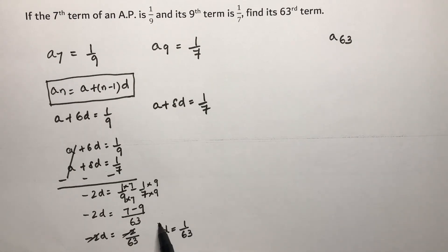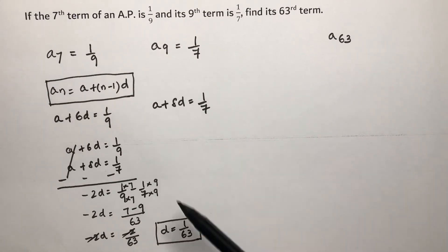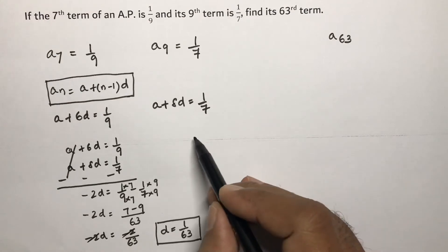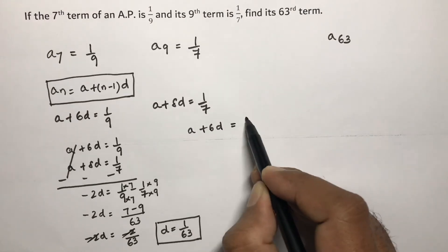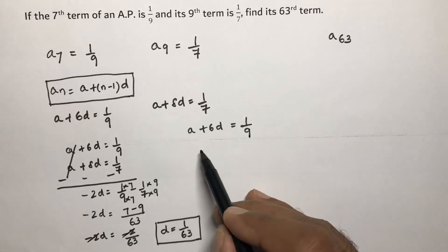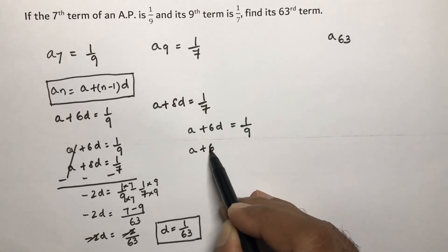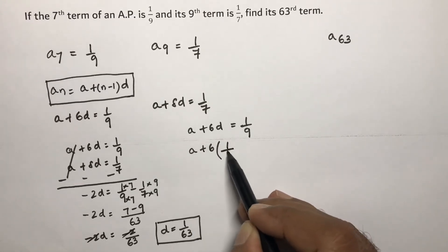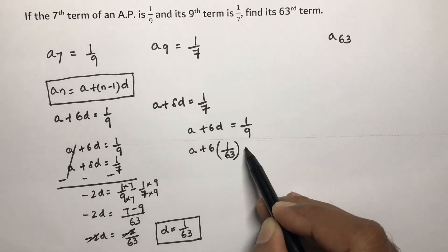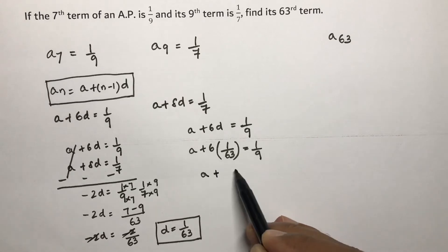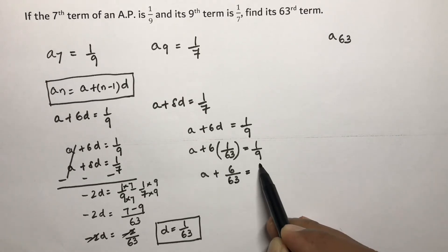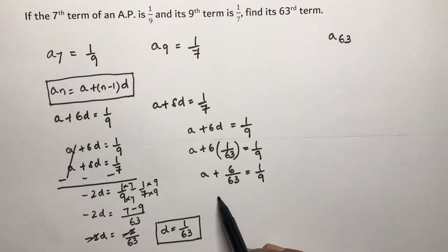d value is 1/63. Now substitute this d value into one of the equations. I will take a + 6d = 1/9. So a + 6 × (1/63) = 1/9.